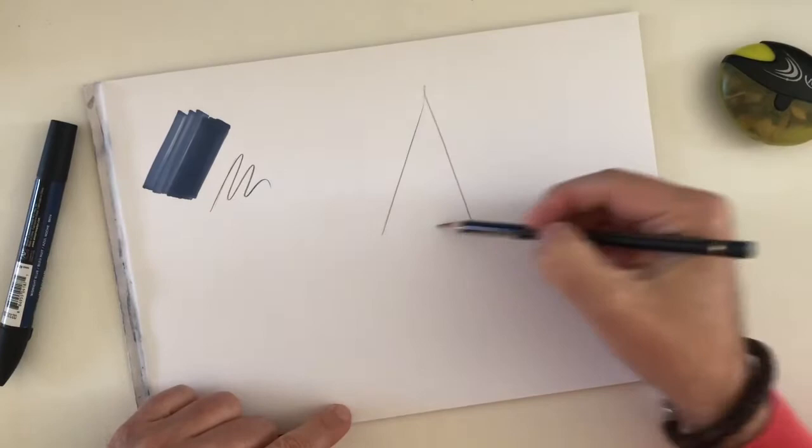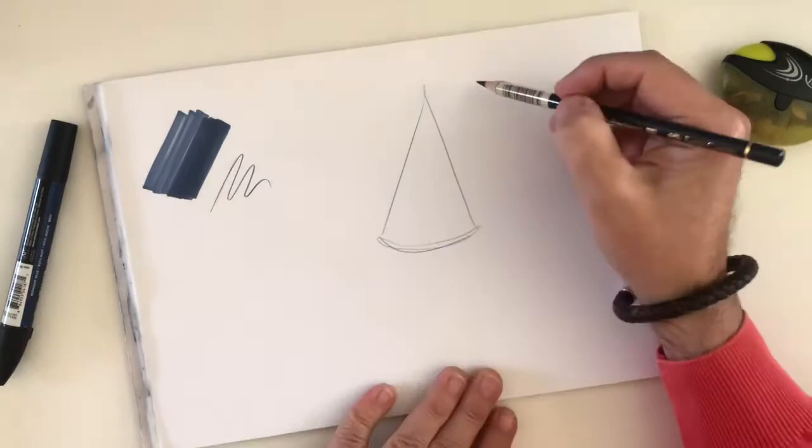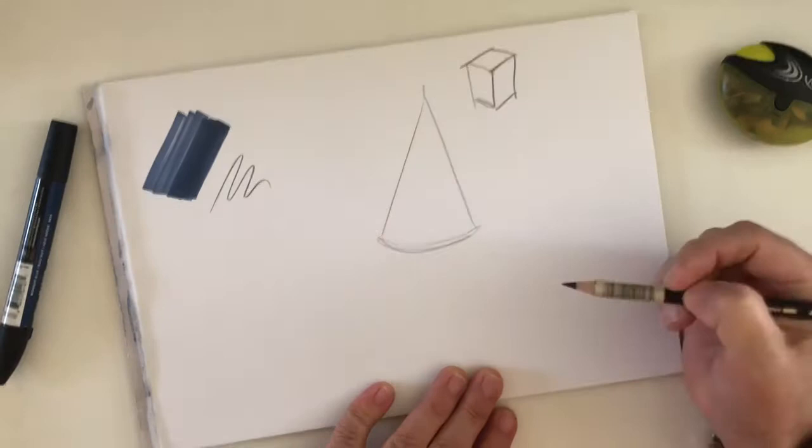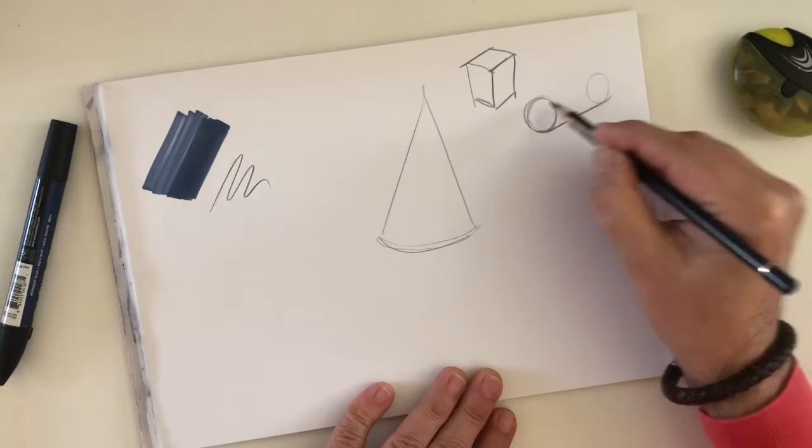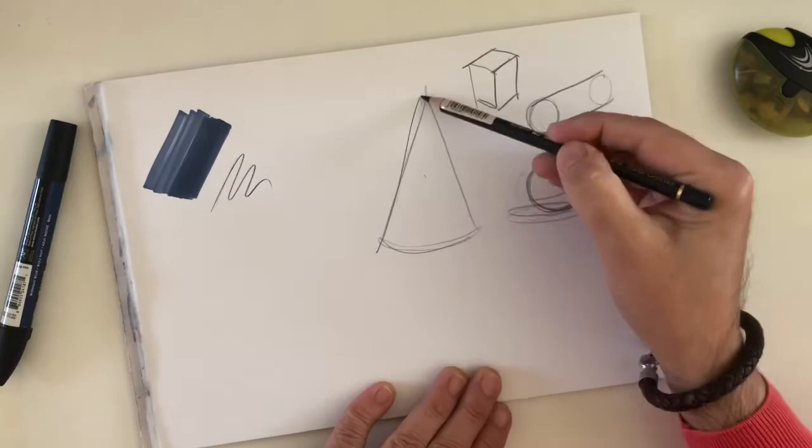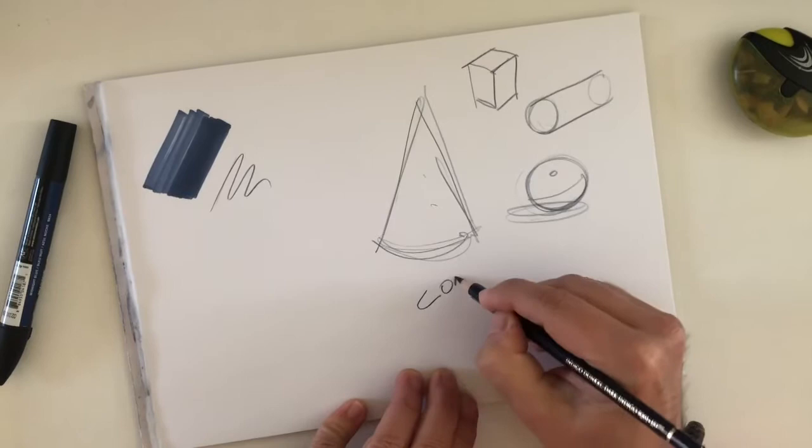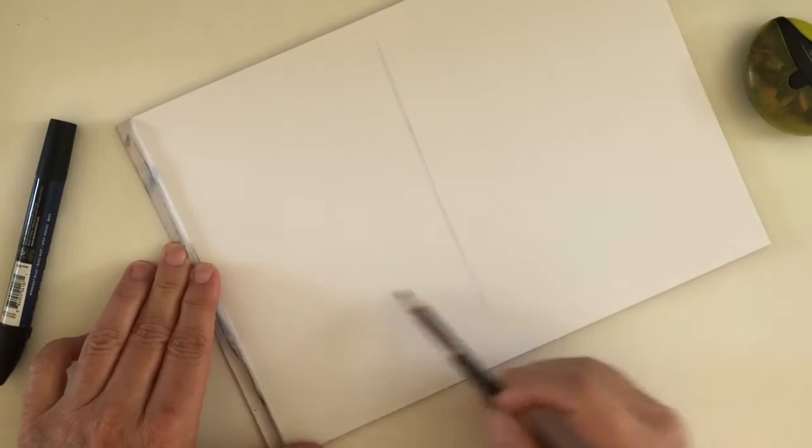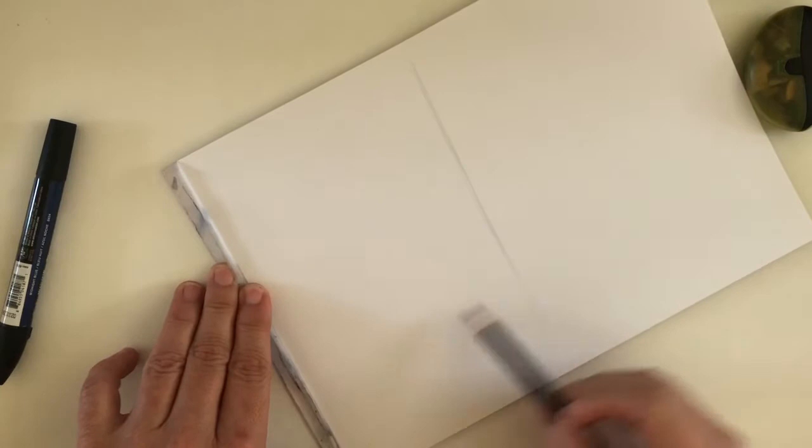We already made our cube, we have a video about cylinder, we already made a video about a sphere, and now it's time to make the last missing one which is our cone. I make a straight line, vertical line, and then I will make basically an ellipse at its base, like this.